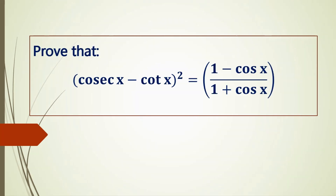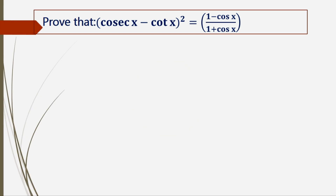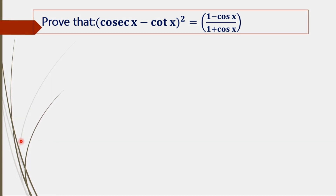In this trigonometry problem, we need to prove that (cosec x minus cot x) whole square equals 1 minus cos x divided by 1 plus cos x. We have to prove that the LHS equals the RHS, that is (cosec x minus cot x) whole square equals (1 minus cos x) divided by (1 plus cos x).